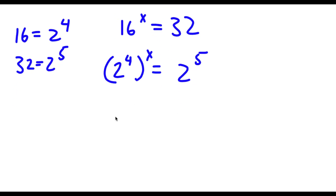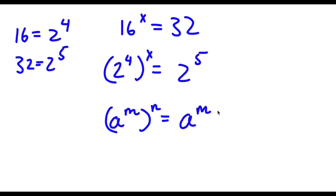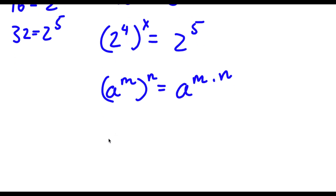Now, if I have something in the form a to the power of m to the power of n, this is the same thing as a to the power of m times n. So in this case I have 2 to the power of 4 to the power of x, so that's going to be equal to 2 to the power of 4 times x, and 4 times x is the same thing as 4x. So now I have 2 to the power of 4x is equal to 2 to the power of 5.